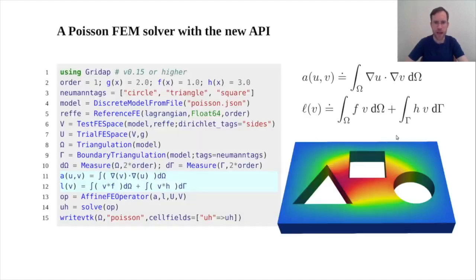Regarding the new user API, I would like to mention that we have improved the way the user writes down the weak form of the problem. You can see this with that particular example. So for the Poisson equation, the user can specify the weak form by writing down these two Julia functions with a syntax very close to the mathematical notation. And of course, this API not only works for this very simple example.